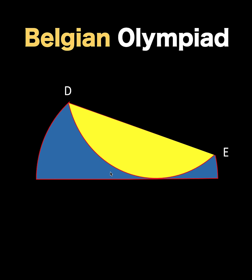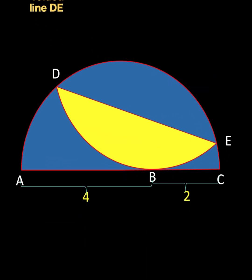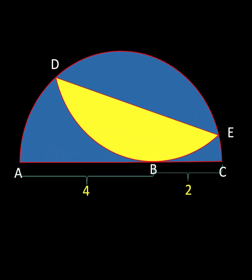We fold it in such a way that the arc and the diameter of the blue semicircle are tangent with each other. Then let's label the points. If the length of segment AB is four units and the length of segment BC is two units, find the length of line segment DE.